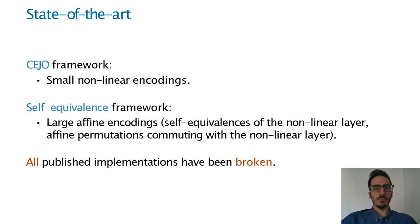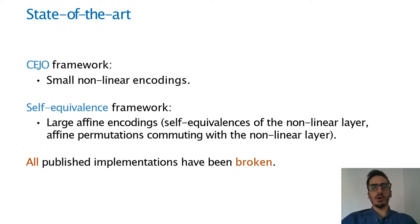Two methods to build White Box Implementations have been published in academia, and they differ on the type of the round encodings and on the way they implement the encoded round functions. The first and most used method is the CIO framework, where the round encodings are concatenations of small nonlinear functions, so that the encoded round functions can be implemented as a network of small lookup tables.